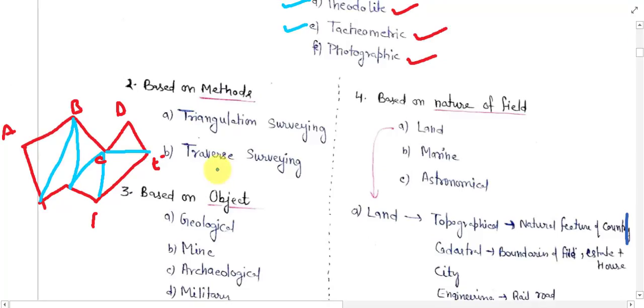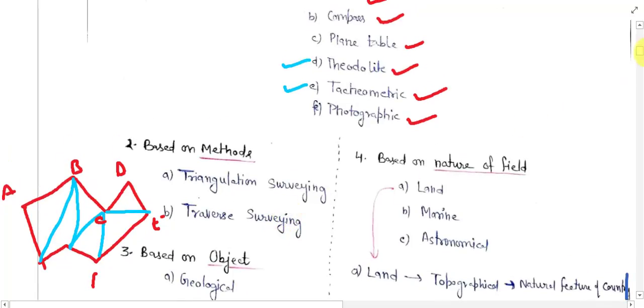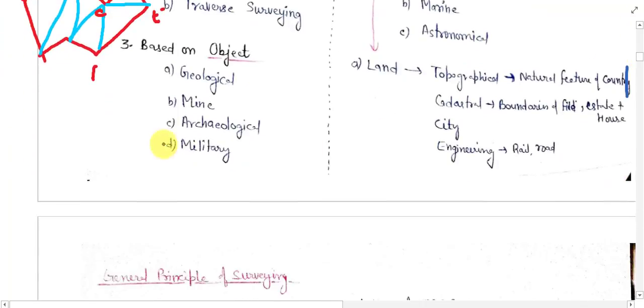The third is based on object. What is the objective of your survey? Like if we use for geological data, then it is geological survey. If we are using mining data, then the survey is known as mining survey.